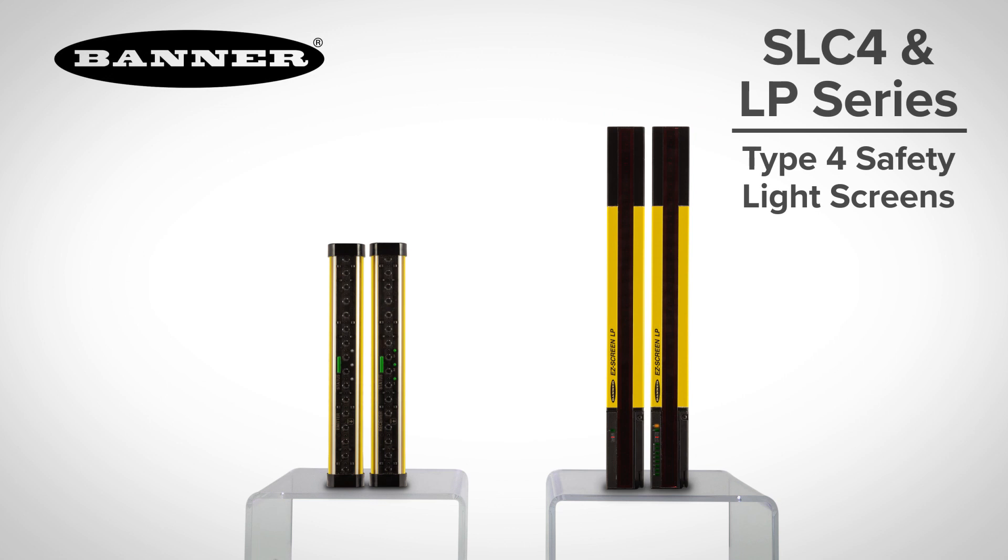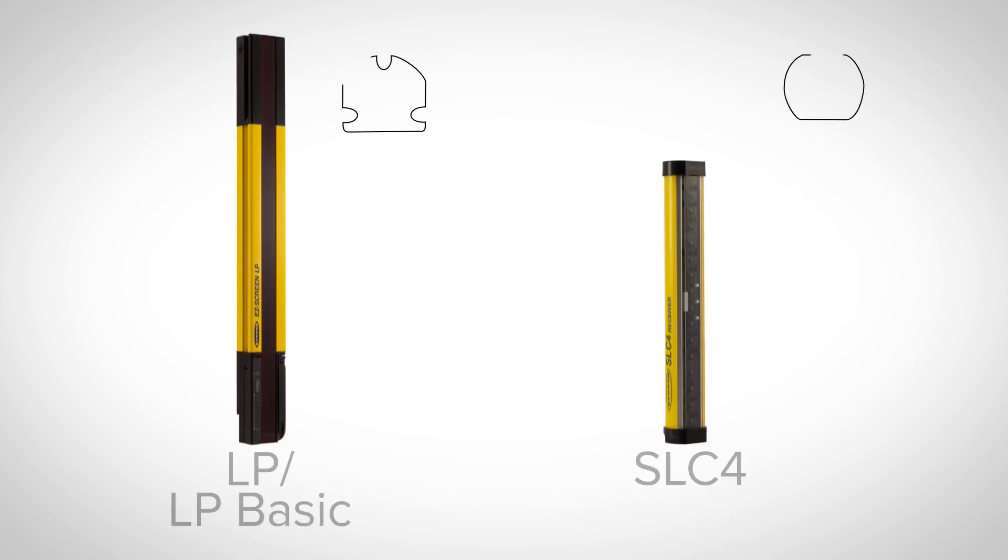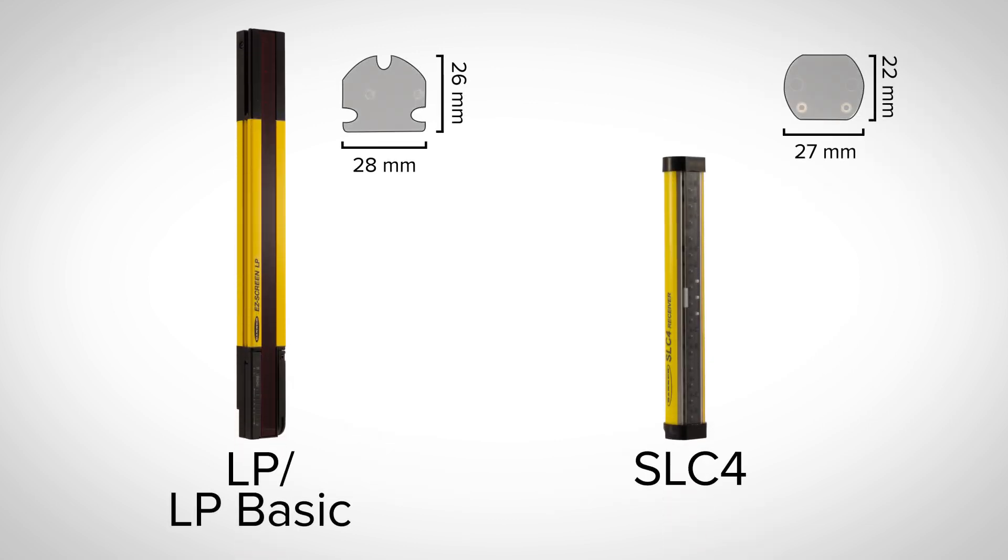Introducing the SLC-4 and LP series of Compact Type 4 Safety Light Screens from Banner Engineering. This series provides the highest level of safety in a low-profile, compact design for smaller production machines in tight spaces where traditional light screens won't fit.